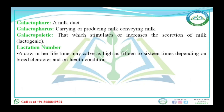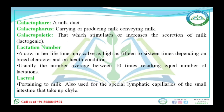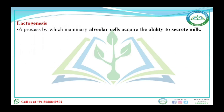Regarding lactation number: a cow can, in her entire lifetime, calve 15 to 16 times depending on breed or health conditions. Usually the average number is 10 times. As the number of calvings increases, the number of lactation periods also increases — if there are 10 calvings on average, there will be 10 lactation periods. The term 'lacteal' pertains to milk and is also used for the lymphatic capillaries of the small intestine.